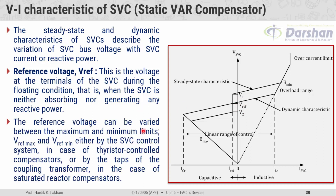The reference voltage can be varied between the maximum limit V1 and the minimum limit V2, also denoted as V_reference_maximum and V_reference_minimum, either by the SVC control system. We can increase or decrease the voltage magnitude from V_reference to V1 or V2 using the control system. If the SVC is made up of thyristor control compensator, we can control this by controlling the firing angle, or by the taps of the coupling transformer in the case of saturated reactor compensator.